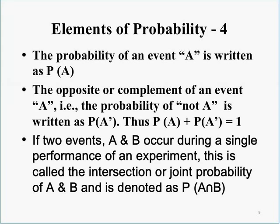The probability of an event A is written as P(A). The opposite or complement of event A — the probability of not A — is written as P(A'), using a prime symbol. Thus, the probability of A plus the probability of not A equals 1.